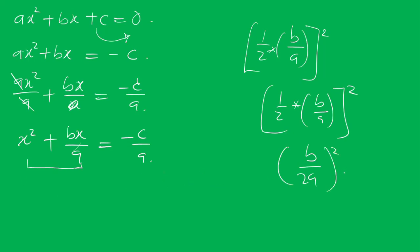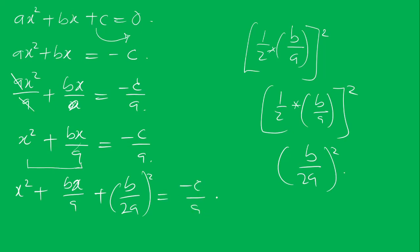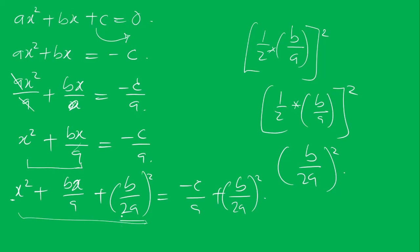So what we are adding is (b over 2a)² on both sides. If you add this value to the left-hand expression, it becomes a complete square — because the coefficient of x² is one here. That is expressed as (x plus b over 2a)² equals minus c over a plus (b over 2a)².